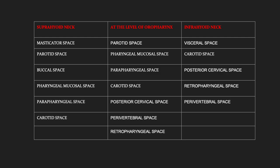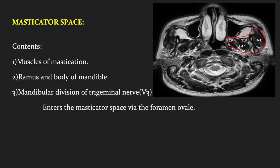Here we have a tabular column showing different neck spaces at the level of suprahyoid and infrahyoid. The masticator space, parotid space and buccal space are exclusive for the suprahyoid neck. The pharyngeal mucosal space continues as the visceral space in the infrahyoid neck. The posterior cervical space is seen at the level of the oropharynx and at the level of the infrahyoid neck. The carotid space, which receives contribution from all three layers of deep cervical fascia, is seen at all levels.